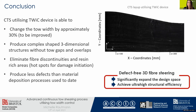We have already completed a layup with 25 tows placed next to each other, narrowing the tow width along the x-axis. We were able to change the tow width by approximately 30%, with further improvements planned. Going forward, we aim to produce complex-shaped three-dimensional structures without any tow gaps or overlaps, eliminate fiber discontinuities, and produce fewer defects than material deposition processes used to date.